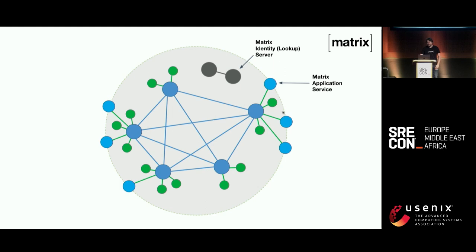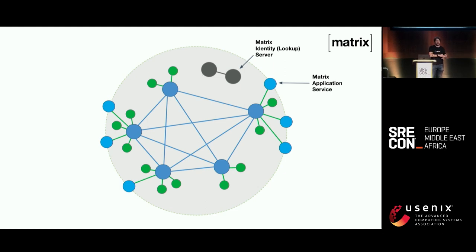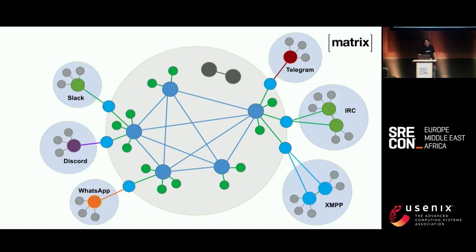Then you have application services — clients with superpowers. They can subscribe to any data on a server to do things like bridge it to a different platform, pipe it into an LLM, index it, or translate it. You also have identity servers for looking up identifiers like email or phone number. Application services are often used as bridges to IRC, XMPP, Telegram, Slack, Discord, or WhatsApp. These are quite easy to write.